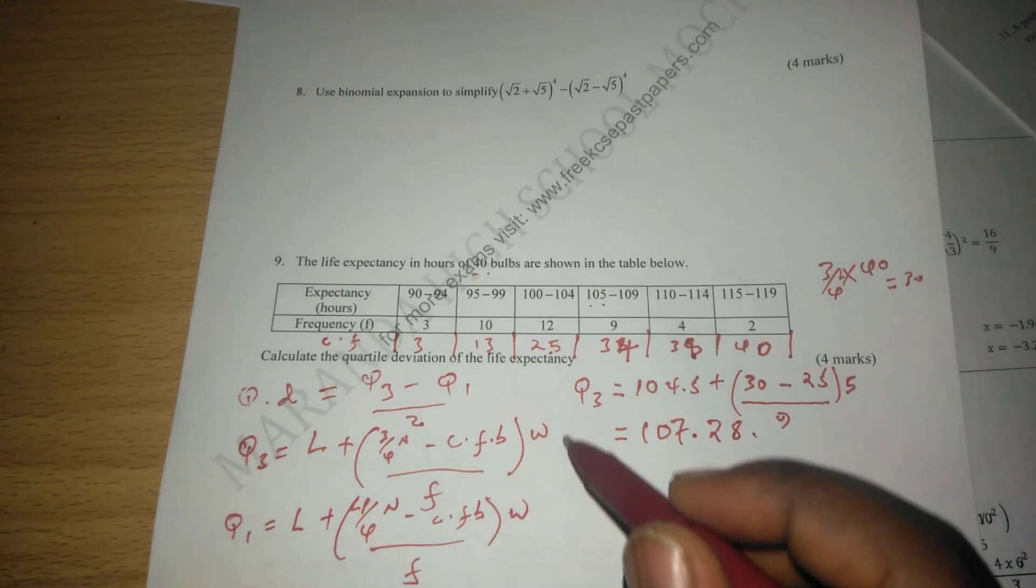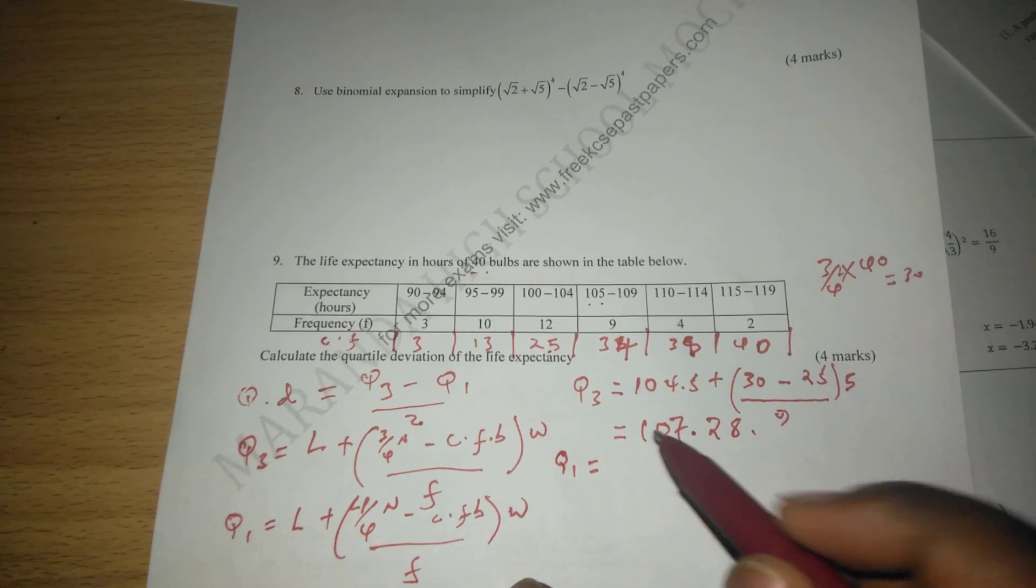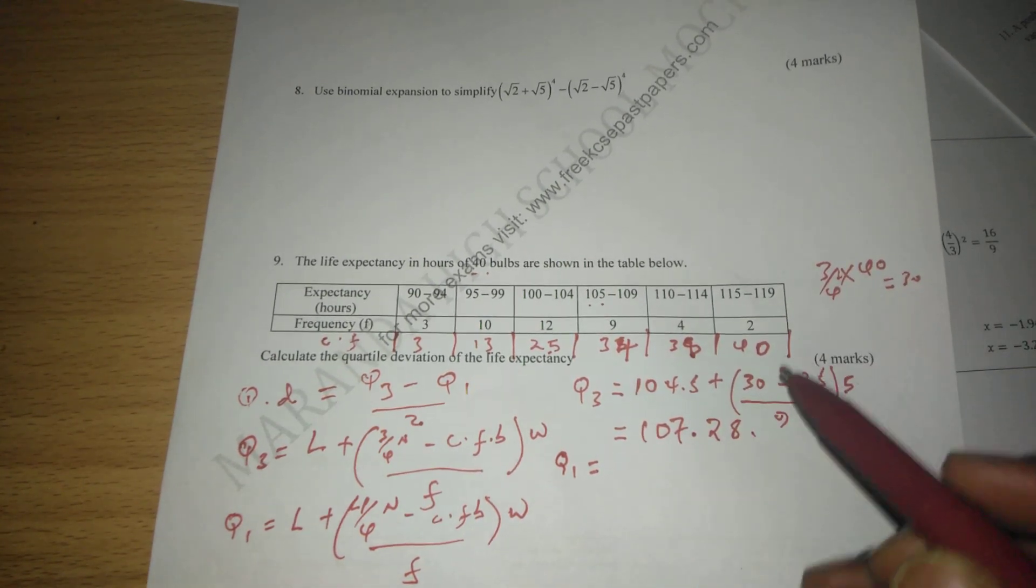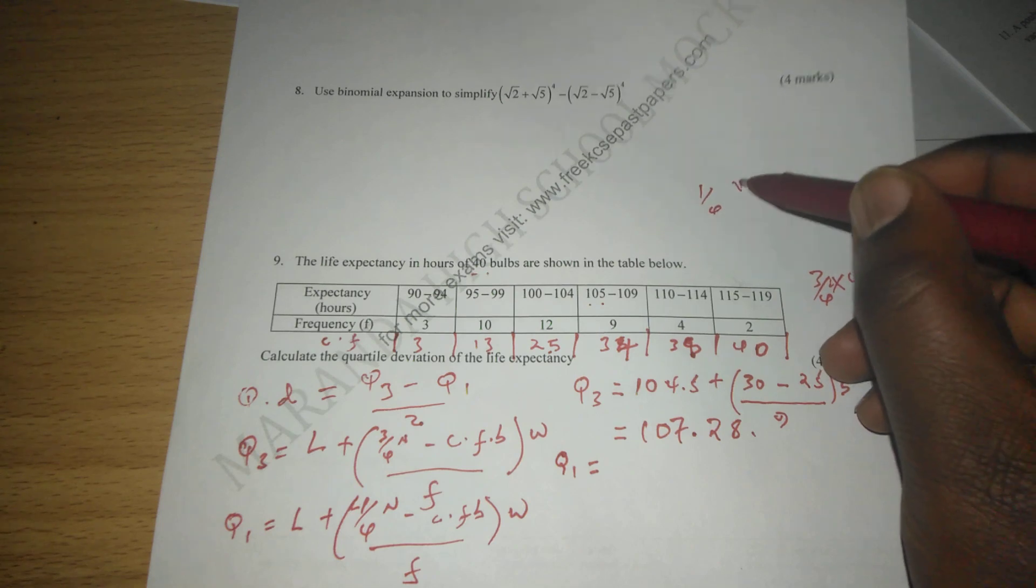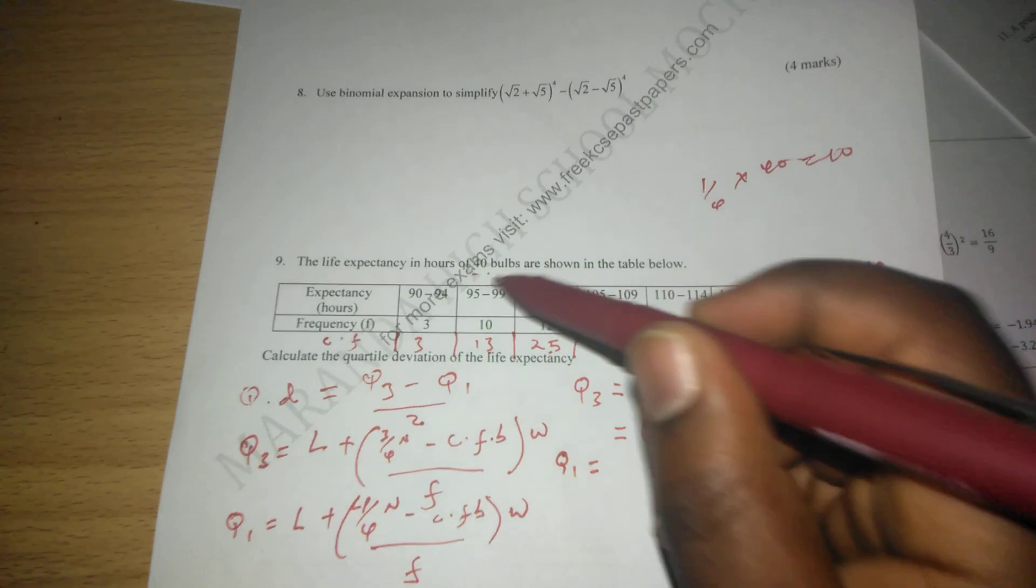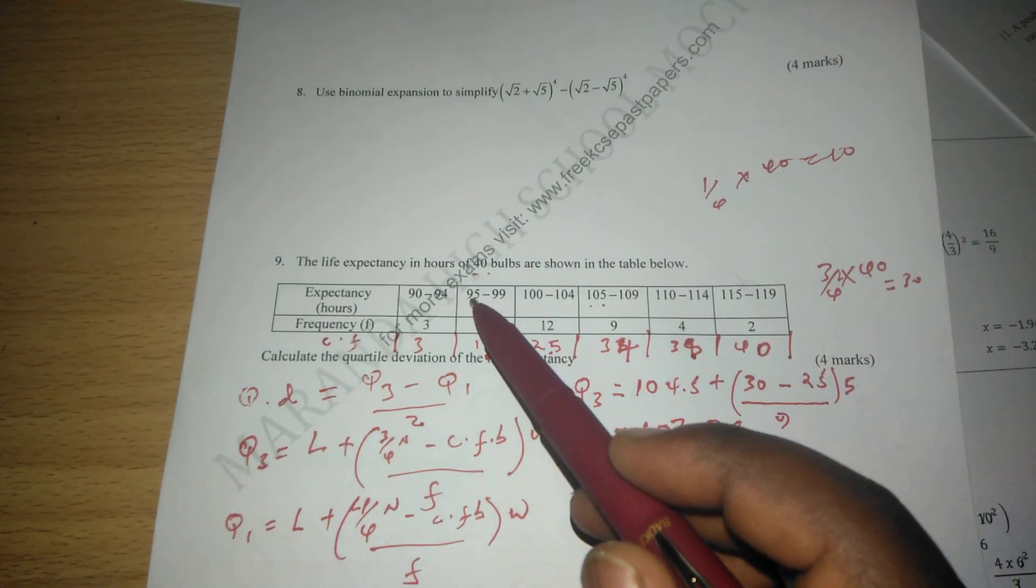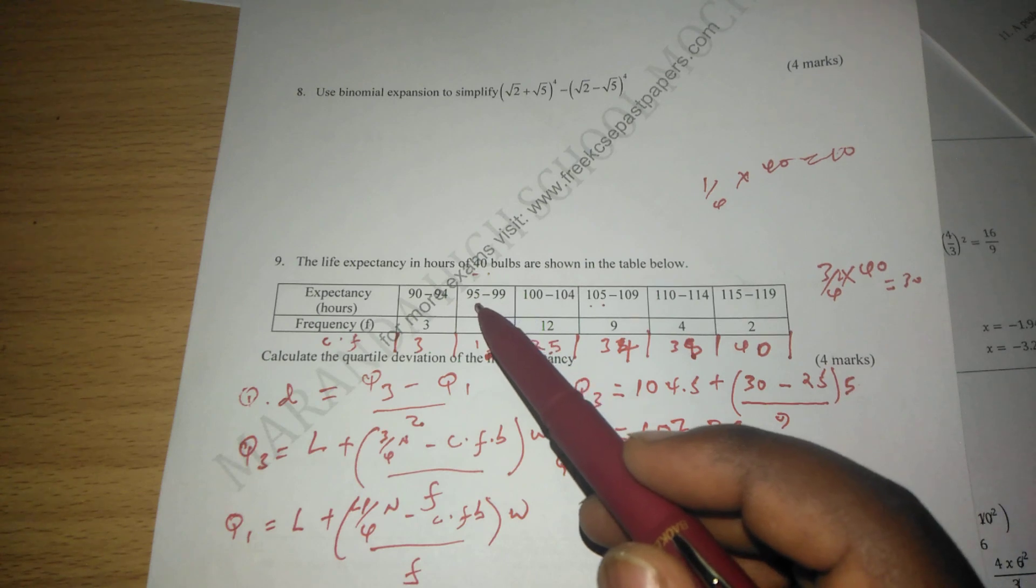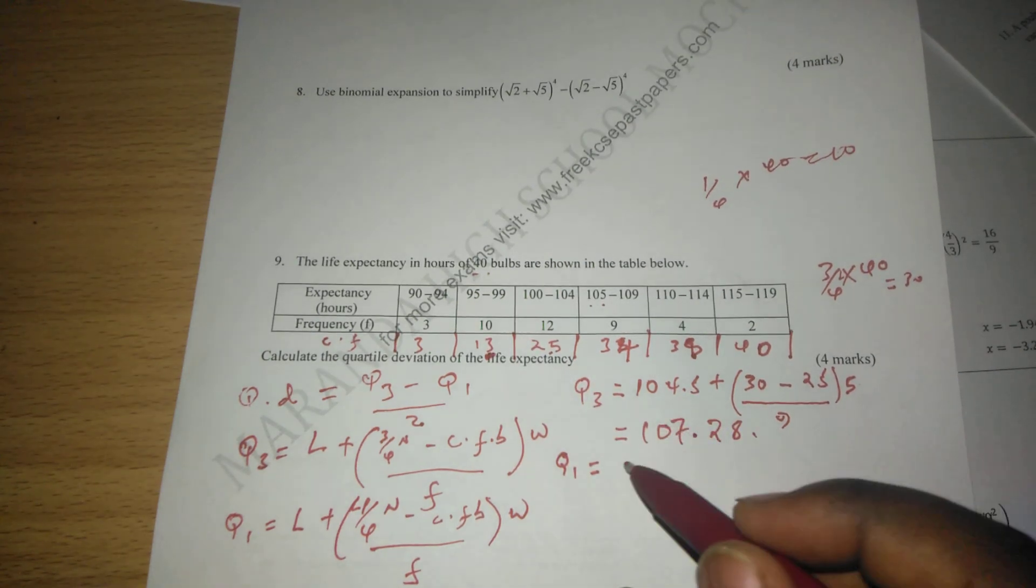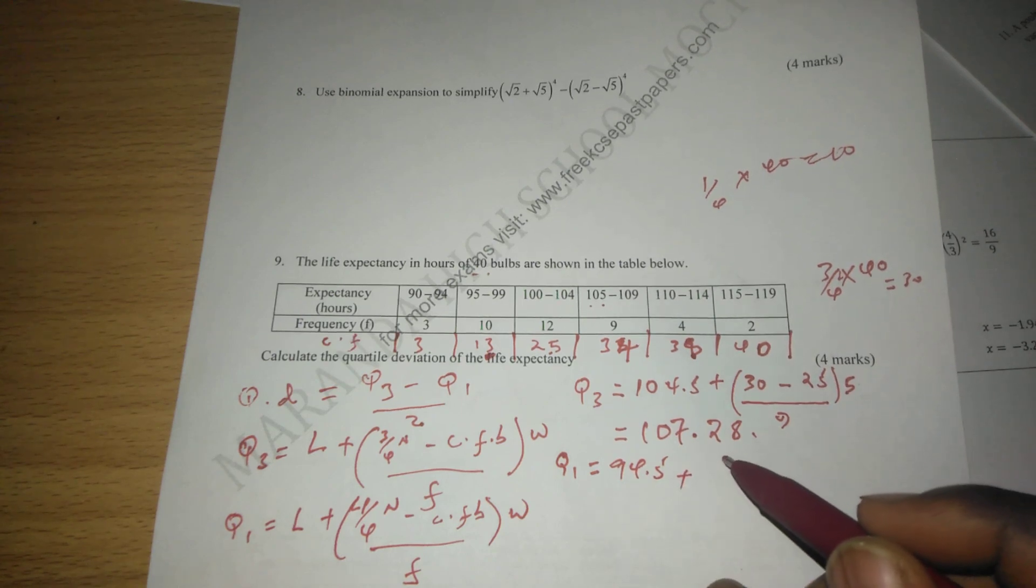Then now on the other side, we also get Q1. Q1 is calculated by a quarter of the data, a quarter of 40 is 10. So where does the first 10 lie? The first 10 lie is between 95 to 99. So the lower class boundary will be 94.5.